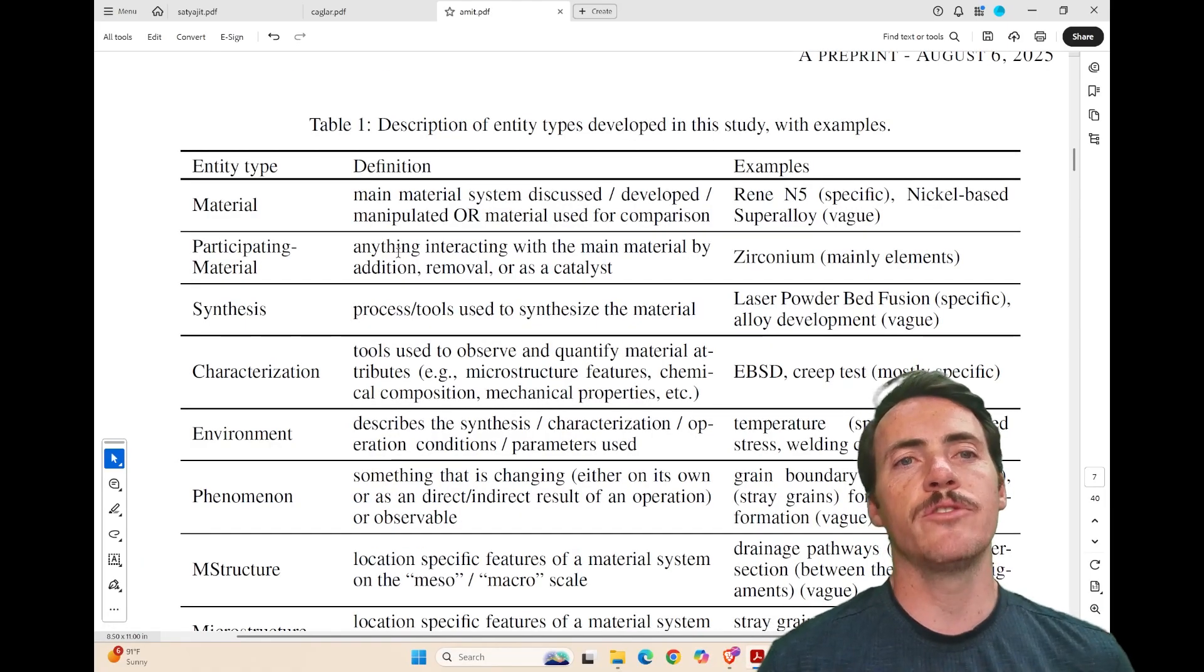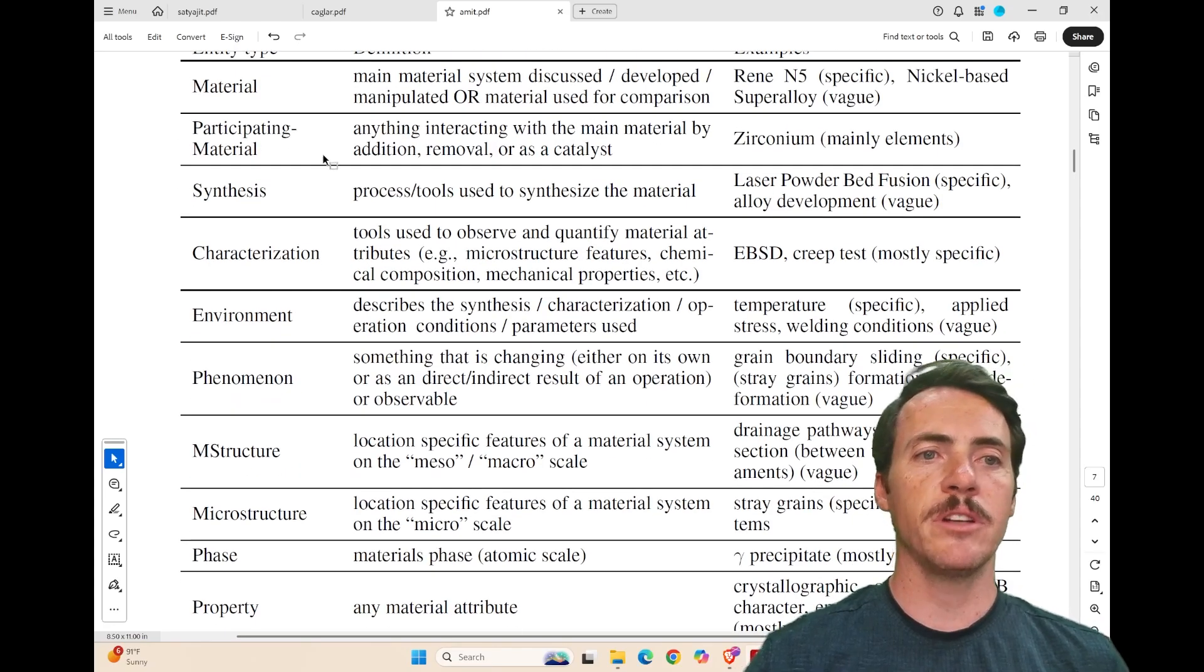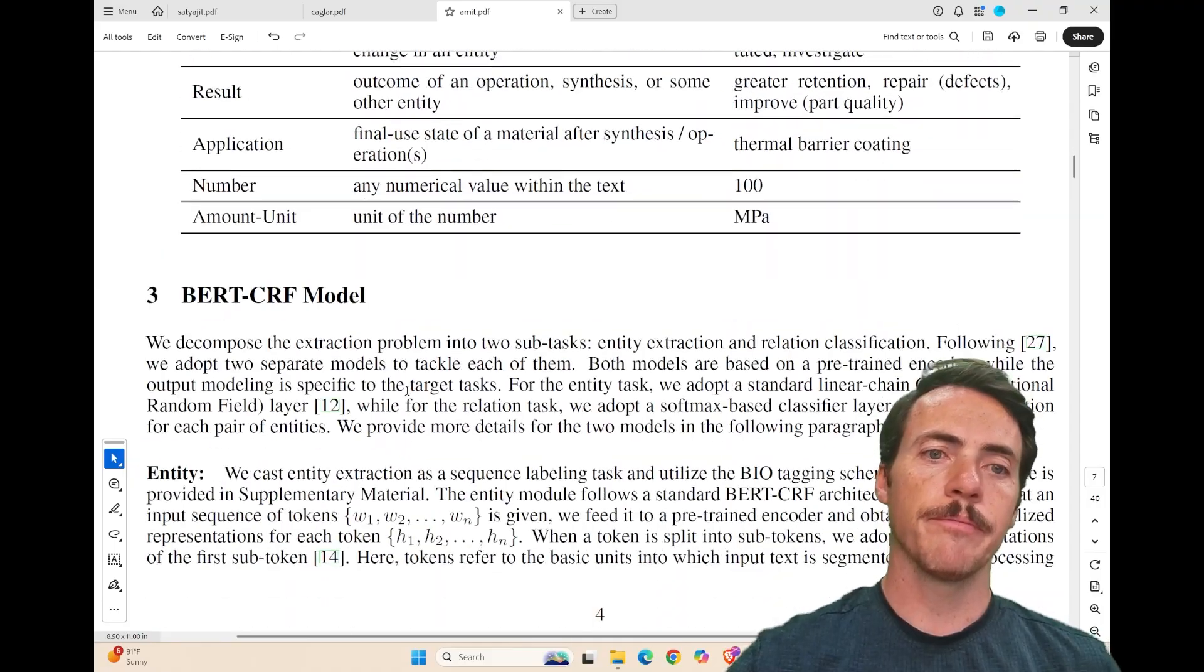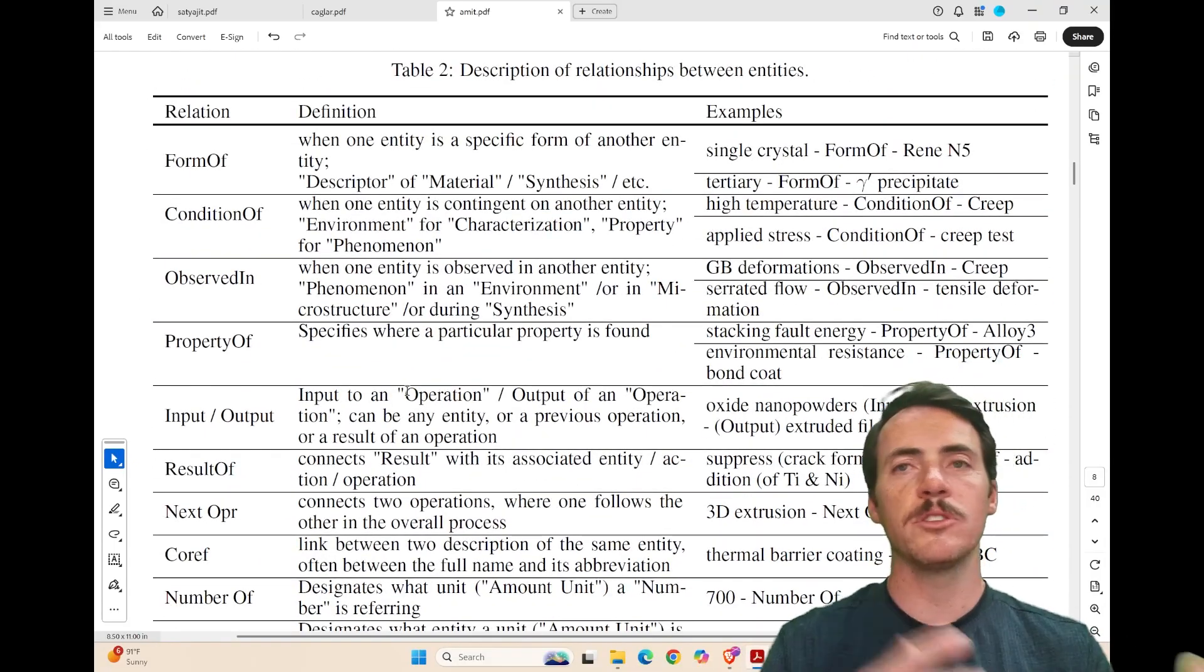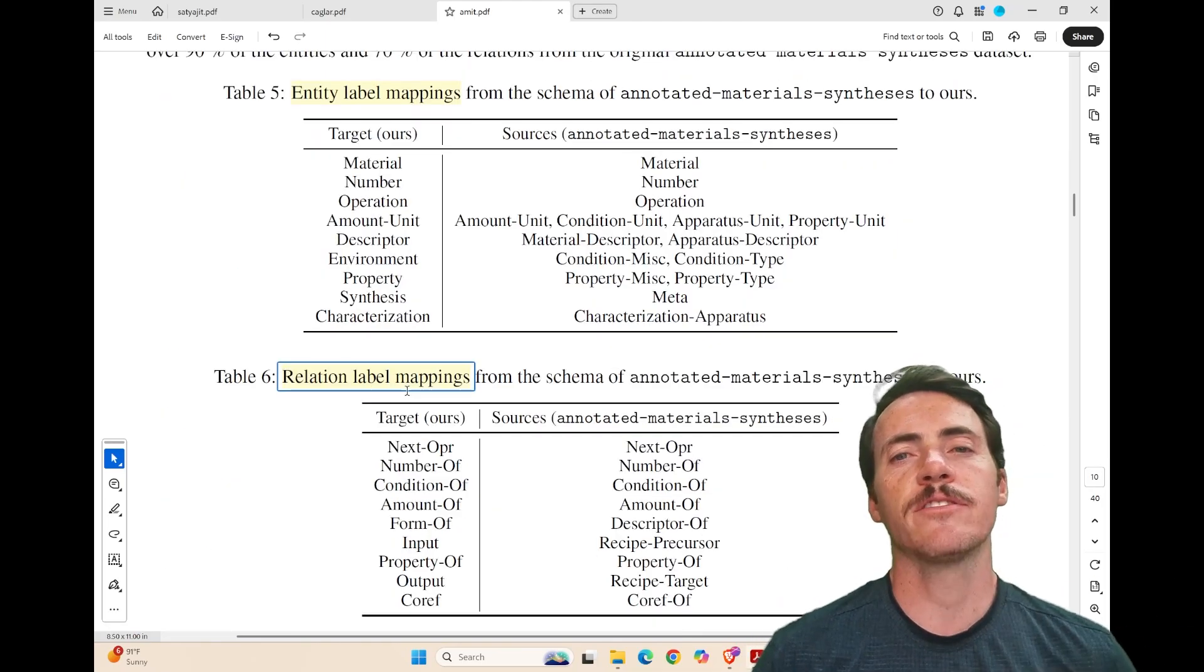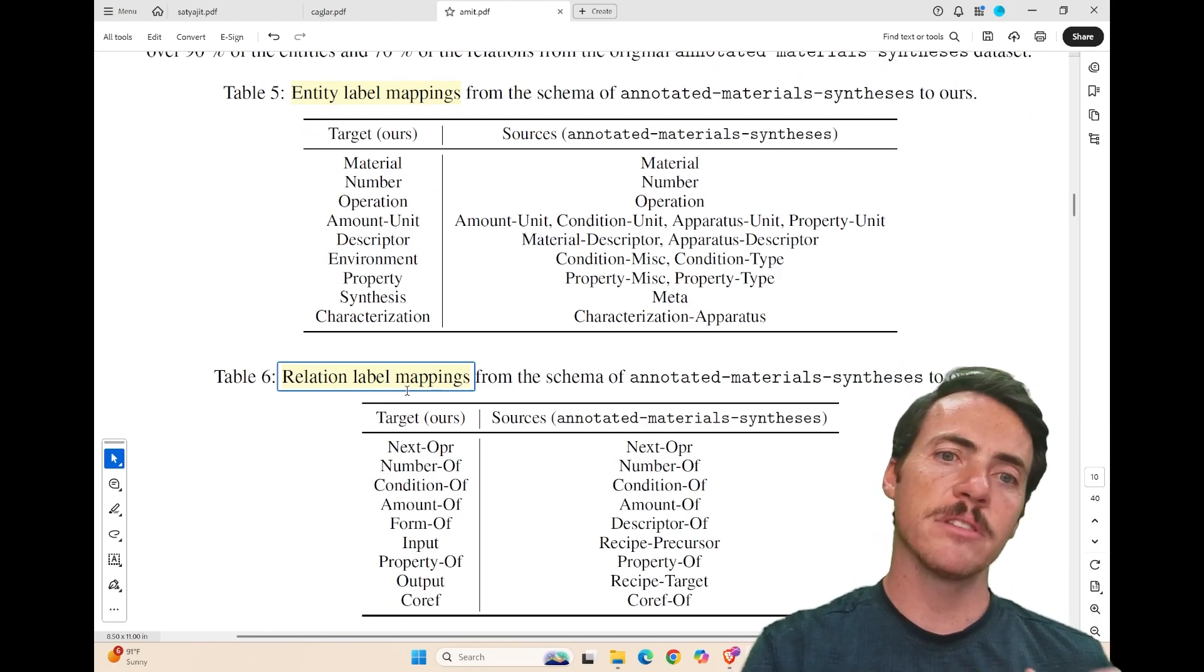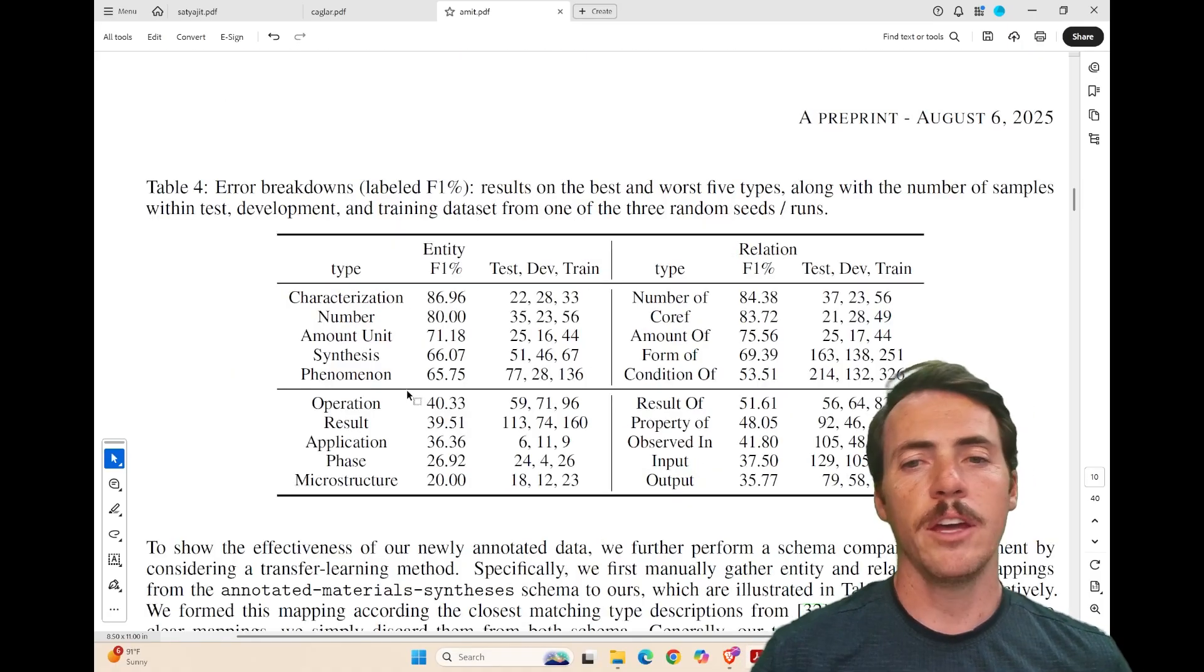So here in the different tables, they introduce the idea of what are the different entity types, whether it's a material or a synthesis, characterization, environment. They're giving you specific examples as well as the definition. And they also have relationships that could exist between these different named entities. So is it a form of, a condition of, observed in, property of? They have some nice comparisons comparing their entity labeling mappings or their relationship mappings with other ones such as the annotated material synthesis mapping.